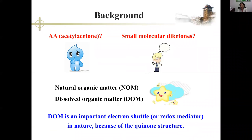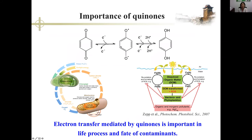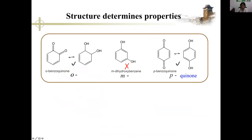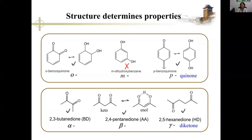Many of you may not be familiar with acetyl-acetone or small molecular diketones, but you must know the terms NOM or DOM — natural organic matter or dissolved organic matter. DOM is an important electron shuttle in nature because of its quinone structure. Because of the reversible electron and proton transfers between the quinone and hydroquinone structures, electron transfer mediated by quinones is important in life processes such as photosynthesis and respiration, and also in the fate and transport of contaminants.